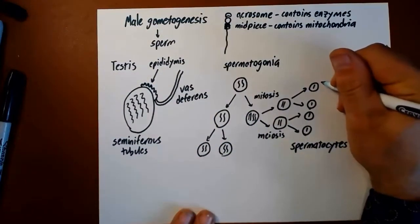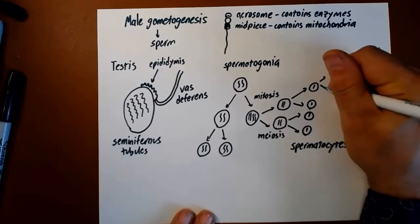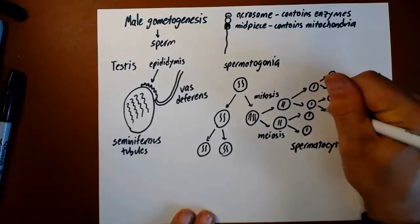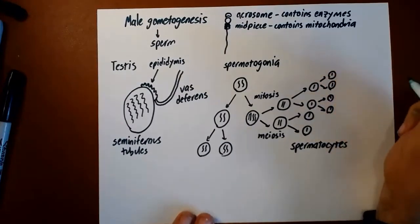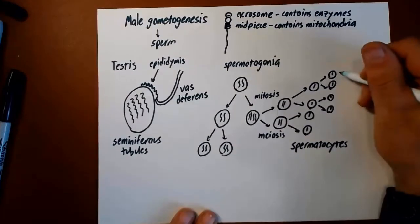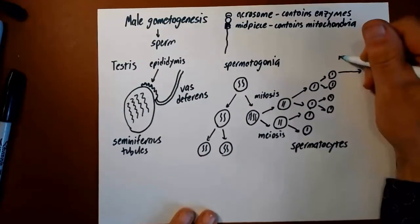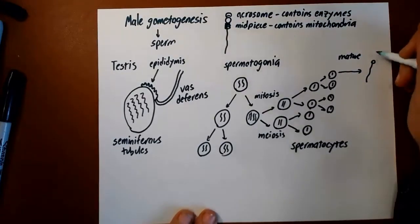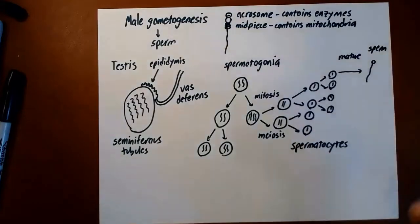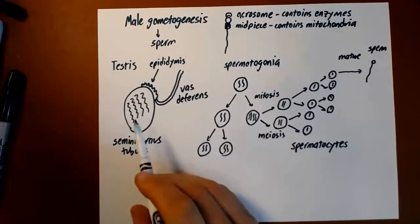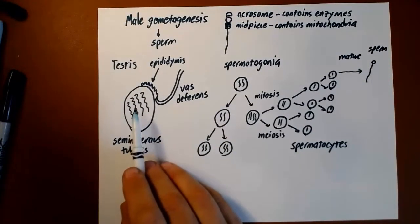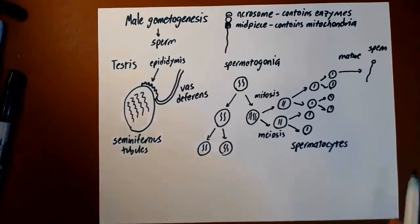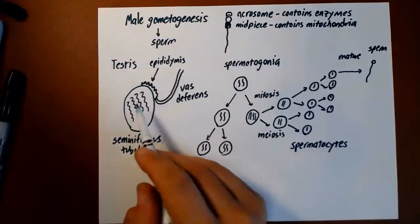These spermatocytes can then divide by mitosis into more spermatocytes, and eventually these mature into sperm. In the testis we are constantly doing this. These spermatogonia are reproducing and some undergo meiosis to produce spermatocytes which split into additional spermatocytes which eventually mature into sperm. Those sperm move out of these seminiferous tubules to the epididymis where they're stored.